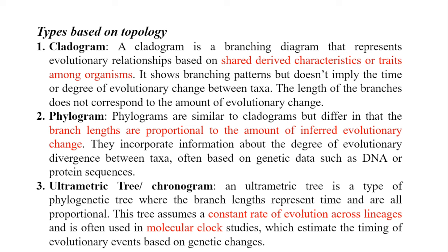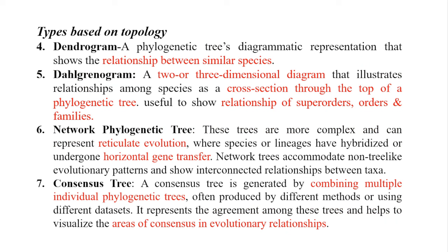A chronogram gives a scale or rate of evolution — it contains a scale showing the number of phenotypic, genotypic, or protein evolutionary changes that happened over a period across the lineage. A dendrogram represents the same information as a cladogram but in a different visual layout, giving a relationship shape between different species. It is applicable for categorization of taxonomic groups.